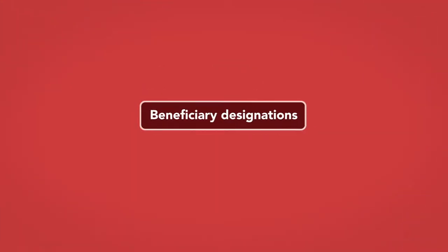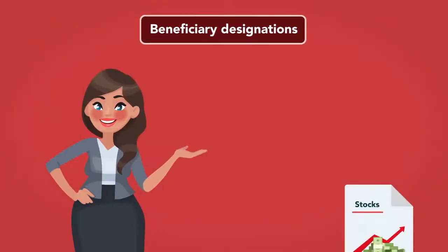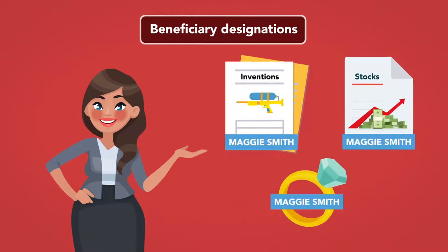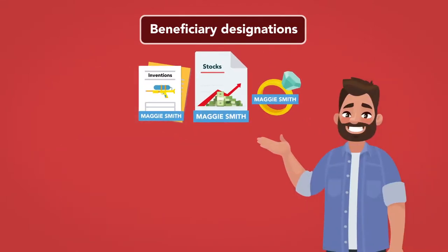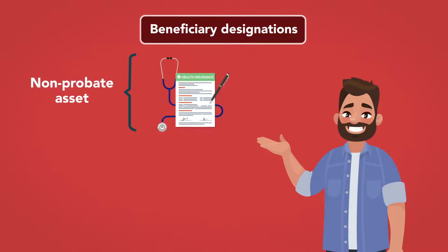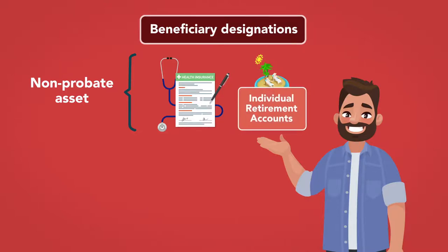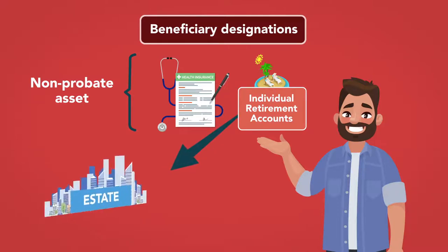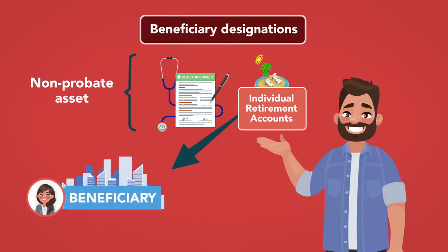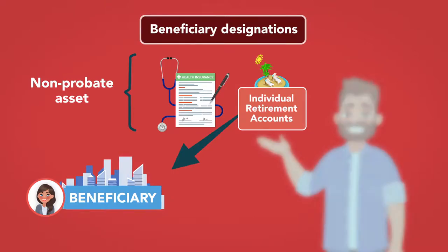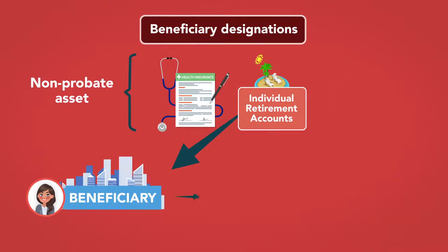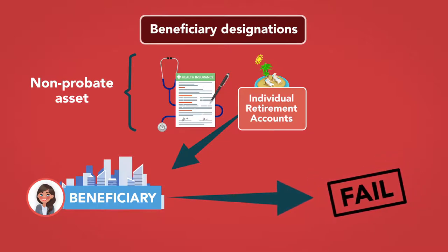Beneficiary designations. Any asset or property owned by a person in her individual name but which passes by contracted death is also a non-probate asset. This includes life insurance and qualified retirement plans such as 401k or 403b plans and individual retirement accounts that contain beneficiary designations. These assets may still become part of the estate if the testator names her estate as beneficiary, where the named beneficiaries are dead, or where the beneficiary designation fails for whatever reason.